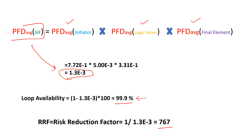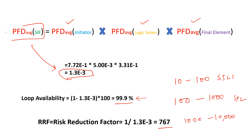The SIL classification based on RRF is: SIL 1 for RRF between 10 and 100; SIL 2 for RRF between 100 and 1000; and SIL 3 for RRF between 1000 and 10,000. Since our loop gives an RRF of 767, it falls in the SIL 2 range from a PFD average perspective.